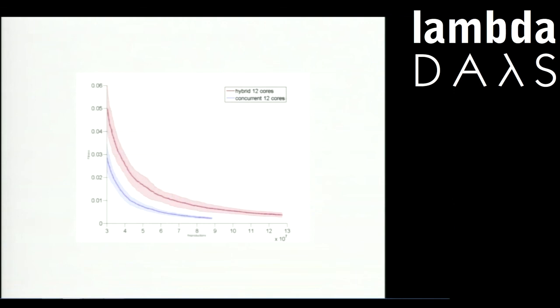On the y-axis you have the fitness value which needs to be minimized. The blue graph is both lower and has a much smaller standard deviation, shown by the bar. It takes fewer populations to reach a better result, and with greater certainty.